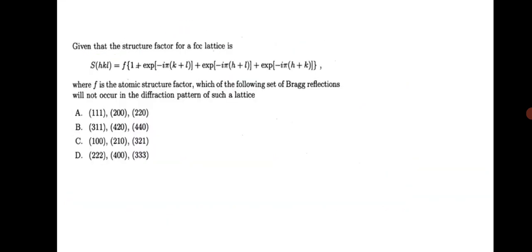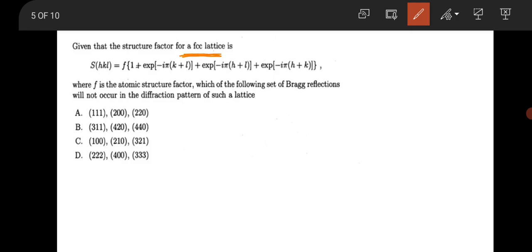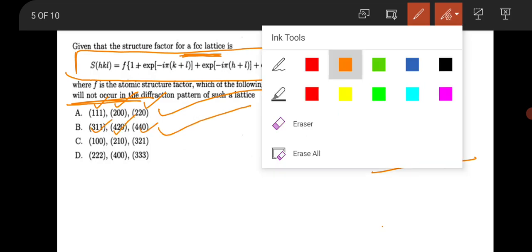The next question is from solid state physics, stating that there is a structure factor of FCC. This is the general formula of the structure factor. Which of the following set of Bragg reflections will not occur in the diffraction? It is very easy for FCC. Check your all h, k, l should be even or all should be odd. Here all is odd, here all is even, here all is even, so this is allowed.